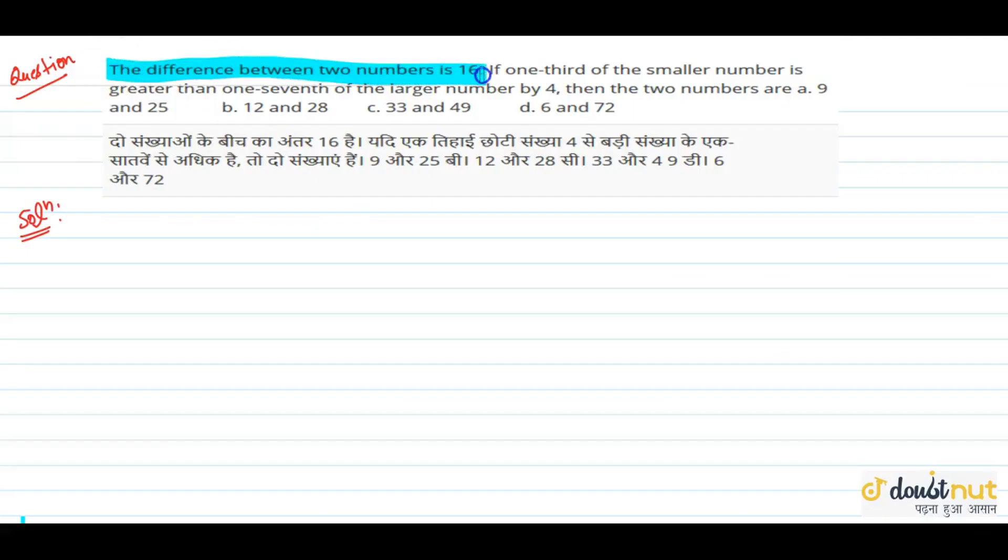The difference between two numbers is 16. If one-third of the smaller number is greater than one-seventh of the larger number by four, then what are the two numbers?